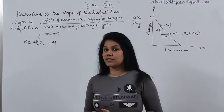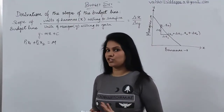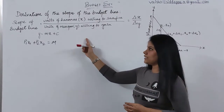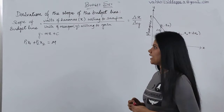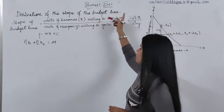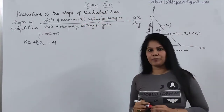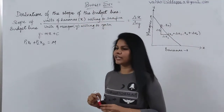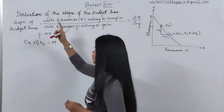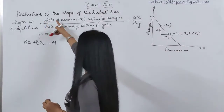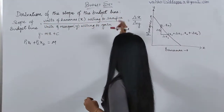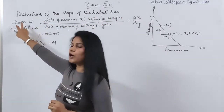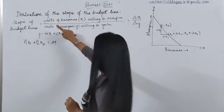We'll look at how we are going to get the budget set and how exactly it is going to behave. Today's topic is the derivation and slope of the budget line — it is a concept of the budget line. We will talk about the derivation, the slope, and the formula for the slope of the budget line.